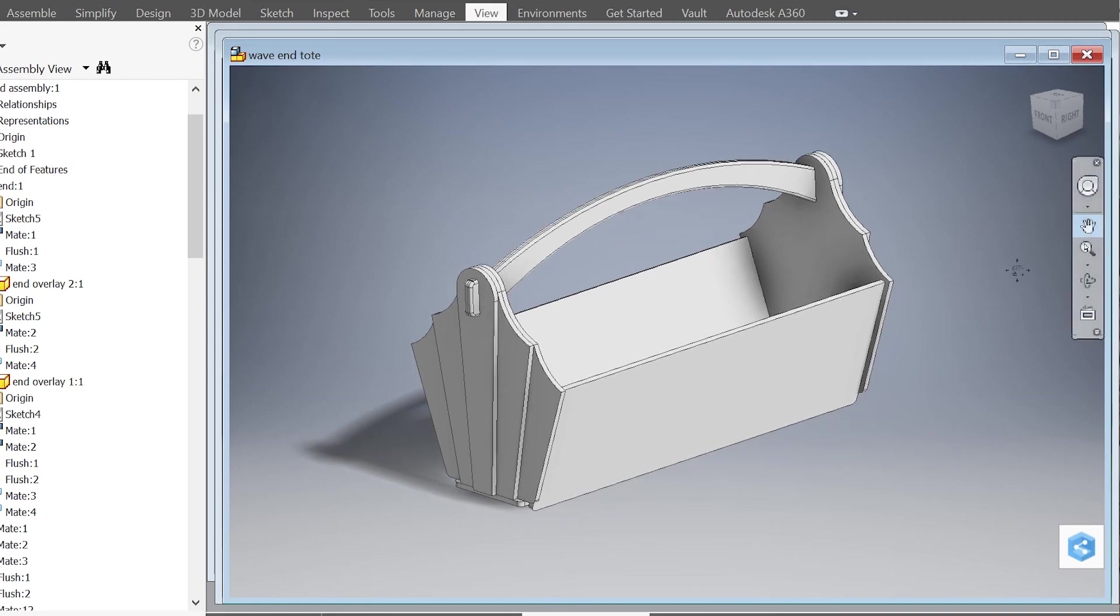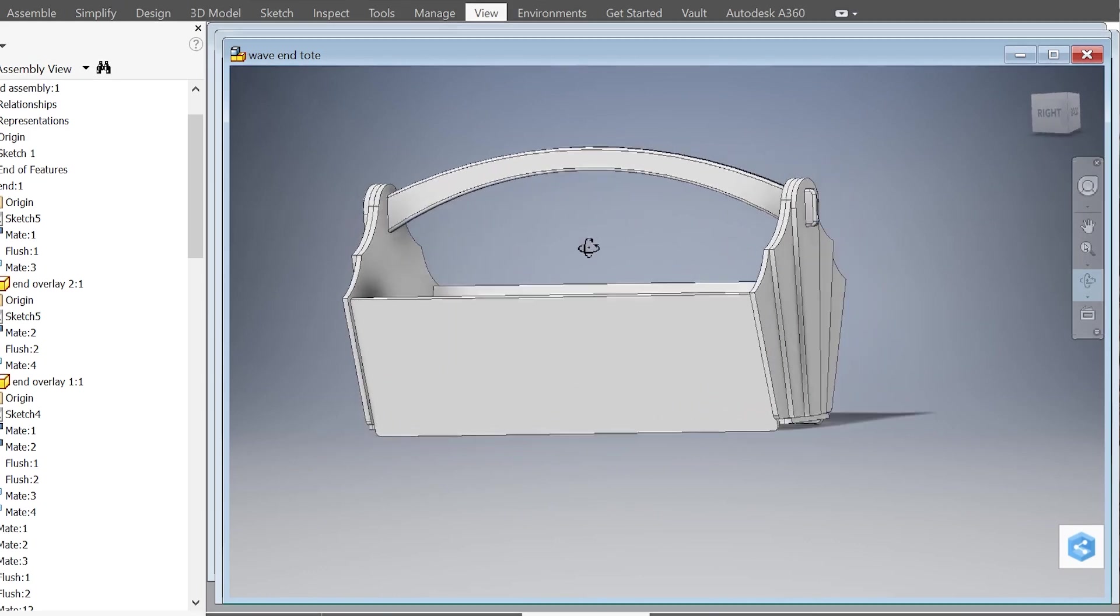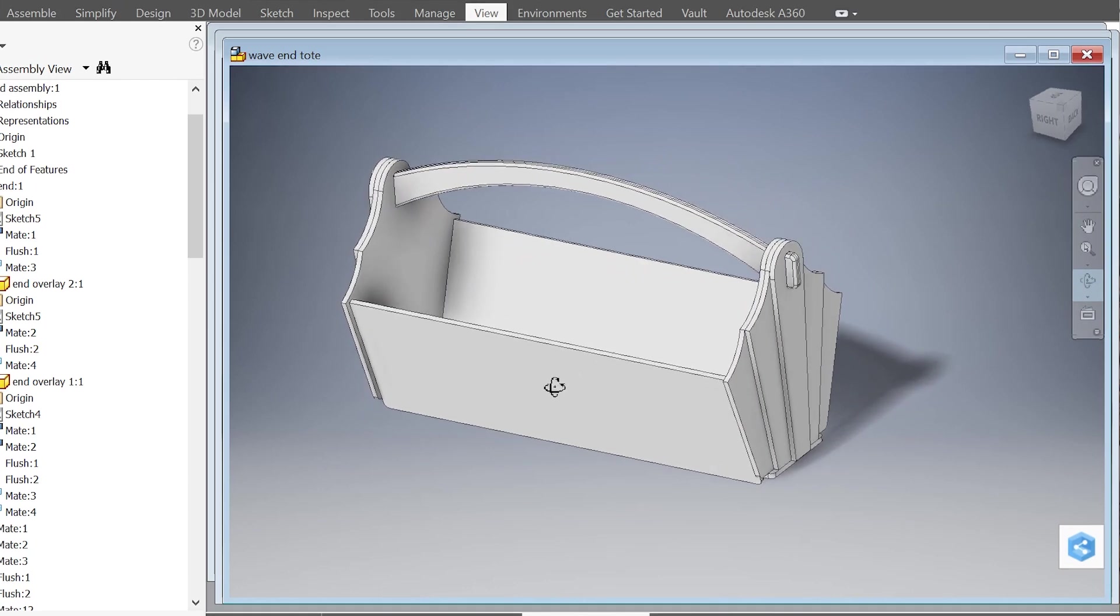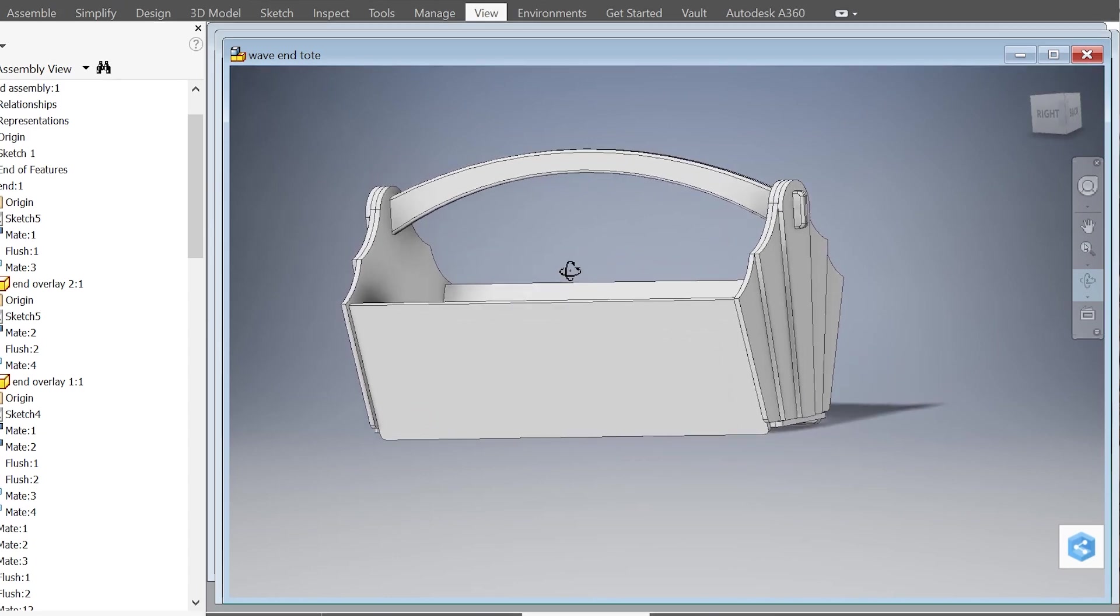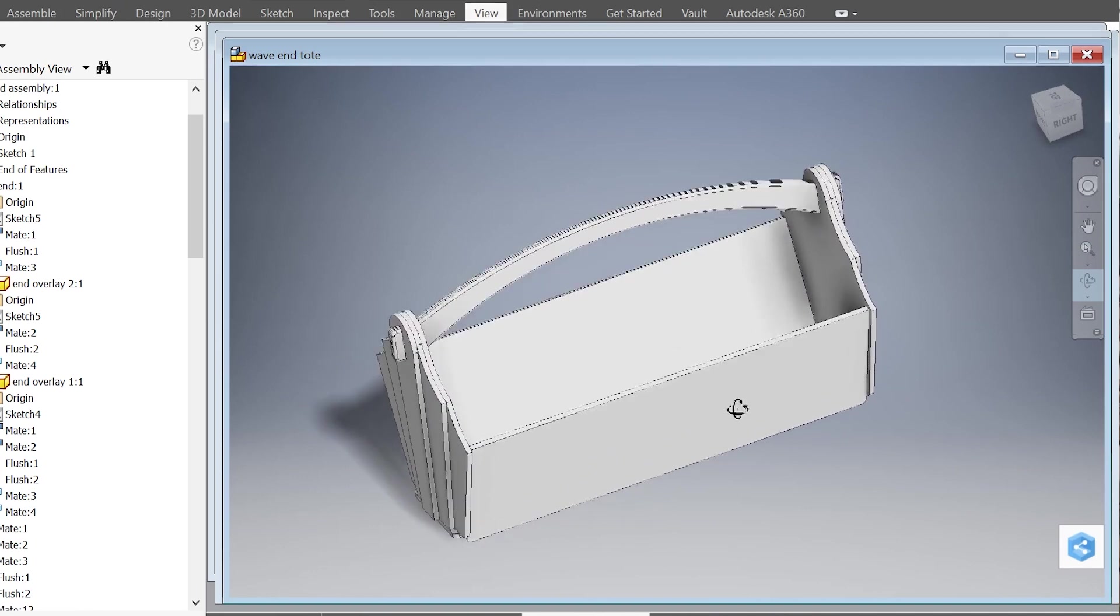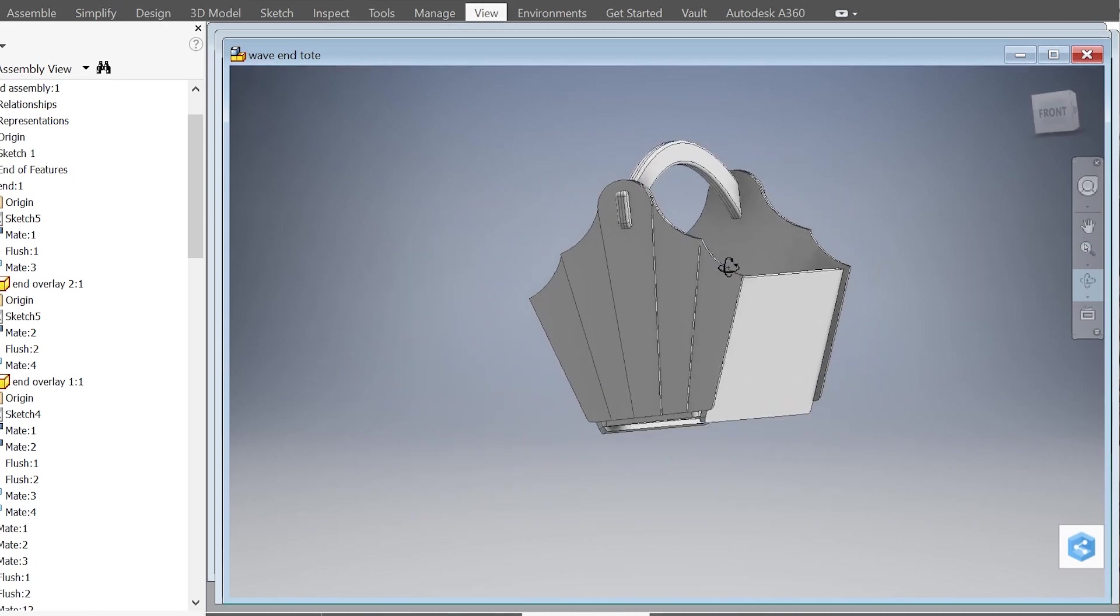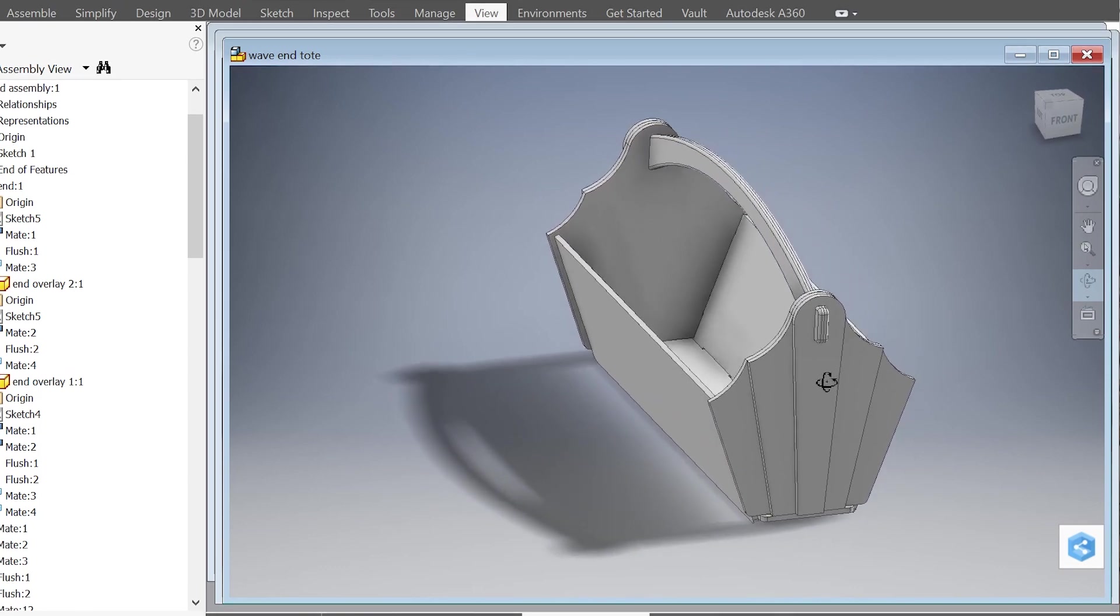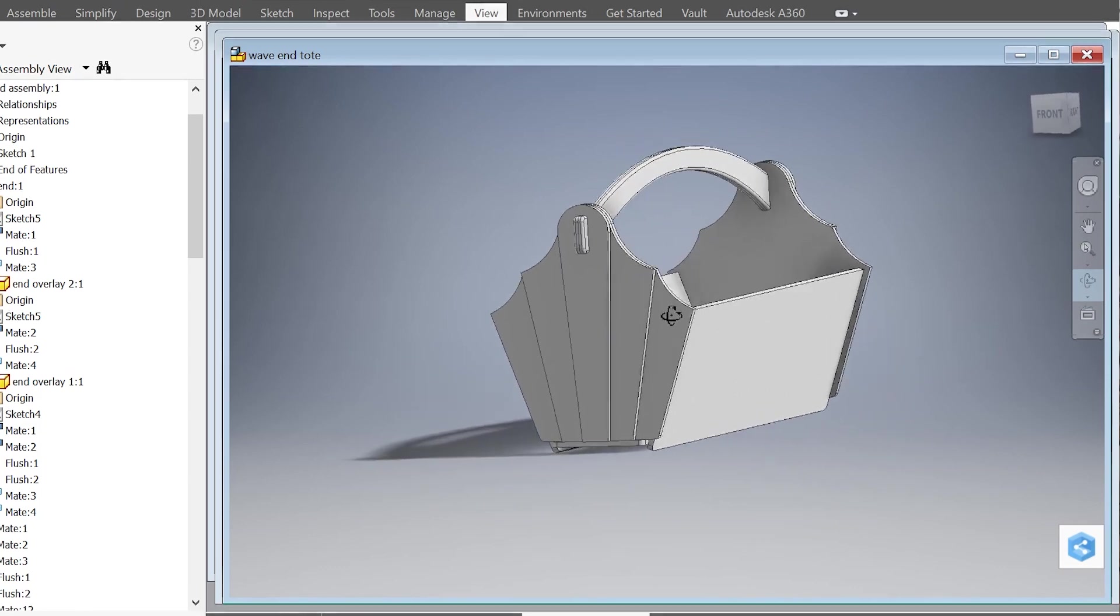This tote also has a curved handle like our others. Only instead of a two part handle that's glued together with wedges at the end, this one is going to be solid wood. I think the solid wood is going to be a nice complement to our otherwise plywood tote. So something a little bit different and we'll talk a little bit more about the joinery for the sides and how they attach to the bottom when we're ready to assemble.